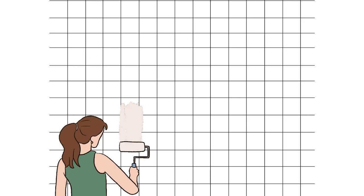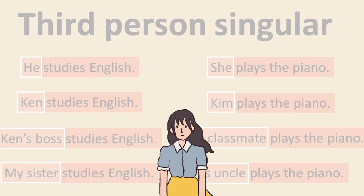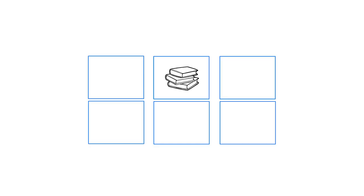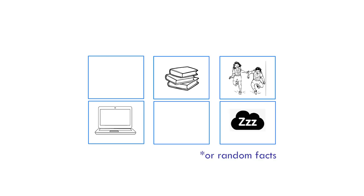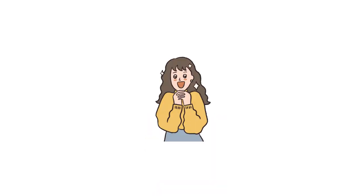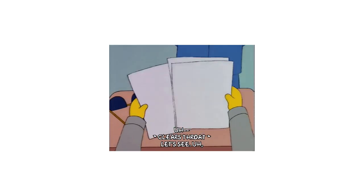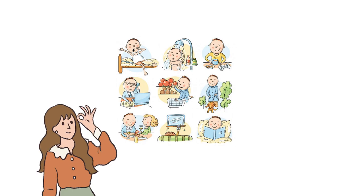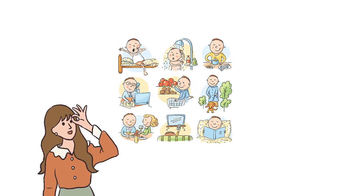If you want them to practice the third singular subject, I have two very simple activities. One is using the grids from the previous game, but instead of students talking about their own routines, let them switch papers with their partner. Or what I really like to do is collect all the papers, shuffle them, and randomly give each student someone else's paper. They should describe that person's routine while the rest of the class tries to guess who it belongs to.